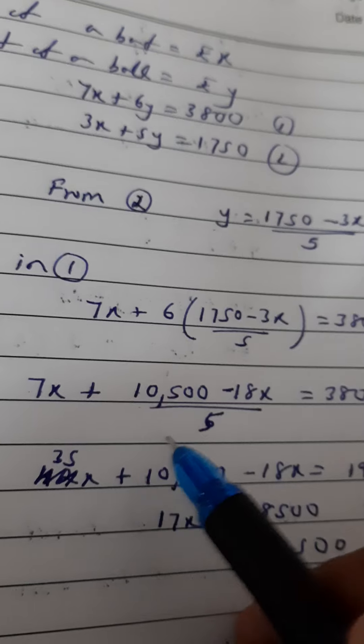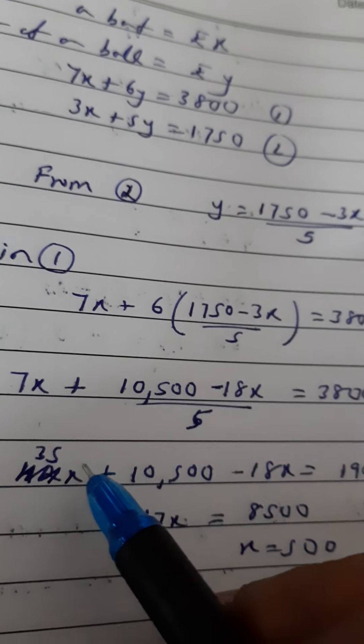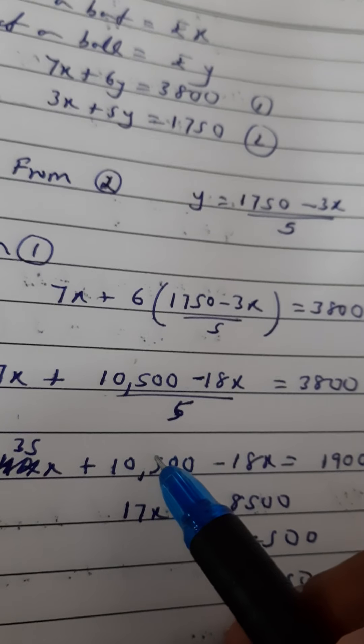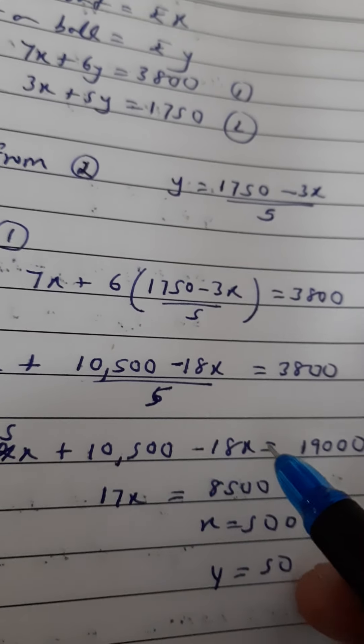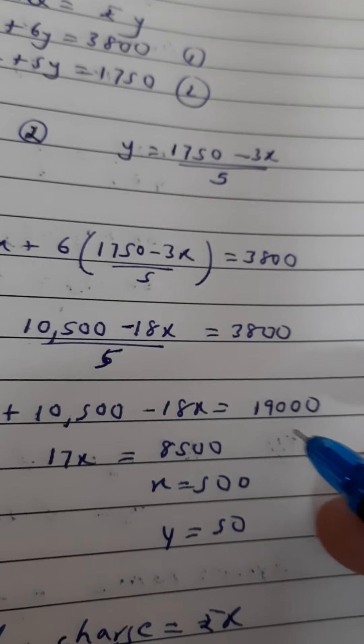Then take LCM. So 7x means 7x upon 1, which becomes 35x. 10,500 minus 18x equals—the denominator here is 5, so cross multiplying you get 19,000.